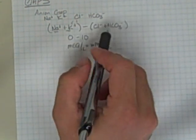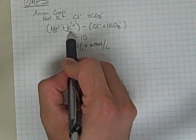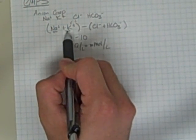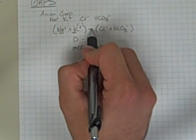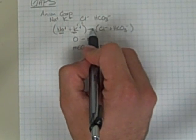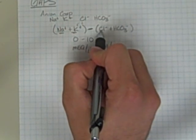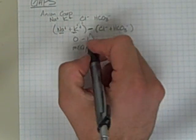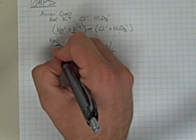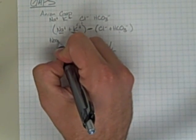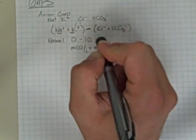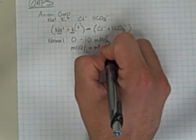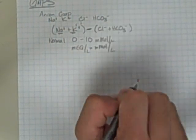So I simply take sodium plus potassium and subtract from that total the chloride plus bicarbonate. Normal for the anion gap is zero to ten, and the units, as always, are milliemoles per liter.